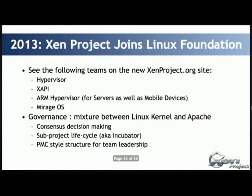What is the status of the Xen project? Xen project joined the Linux Foundation last year. We have divided the project into four teams: the first is the hypervisor in general, the second is XAPI, the third is the ARM hypervisor for servers and mobile, and the last is MirageOS, which is a unikernel that can run on a VM. For governance, it's a mixture between Linux Foundation, Linux kernel, and Apache governance — every decision is made by consensus.